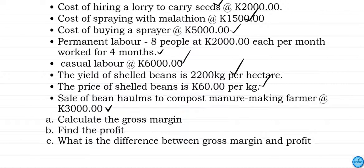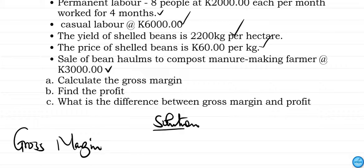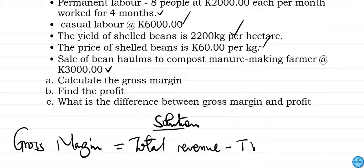We've been asked to find the gross margin, the profit, and the difference between gross margin and profit. Gross margin is found using the formula: gross margin equals total revenue minus total variable cost. Total revenue is the same as total income, so we need to find the total income from the beans and subtract total variable cost to get the gross margin.